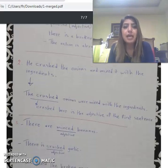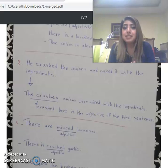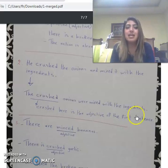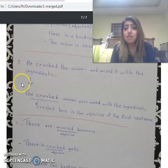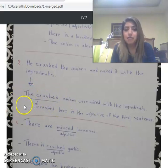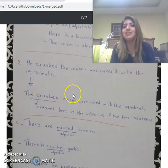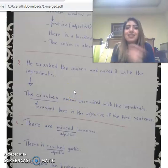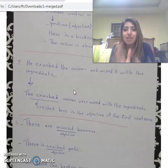Another example: 'He crushed the onions and mixed it with the ingredients.' Here, 'crushed' is a simple past verb. But how do we use it as an adjective? We change its position so it no longer looks like a verb: 'the crushed onions.' Since he already crushed the onions, we can say 'the crushed onions were mixed with the ingredients.'